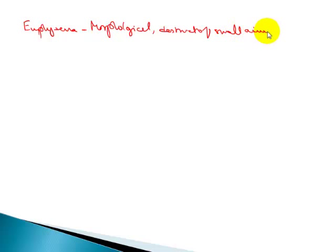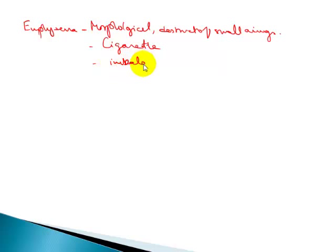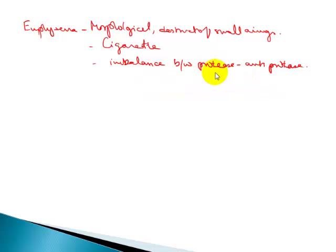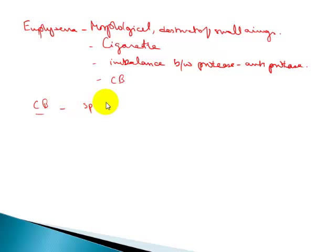Cigarette smoking plays an important role in the causation of emphysema. The pathogenesis is mainly an imbalance between protease and anti-protease levels. If there is a deficiency of anti-protease or excess protease such as elastase, there will be destruction of the alveolar walls, and this may be associated with chronic bronchitis.